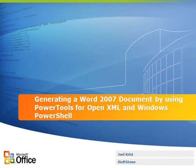Hello. My name is Joel Christ. I'm a developer with iSoftstone, and today I'm going to be doing a walkthrough of a Windows PowerShell script that uses the Power Tools for OpenXML to generate a Word 2007 document that contains document property values from other Word 2007 documents.